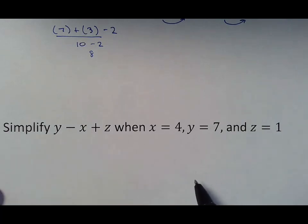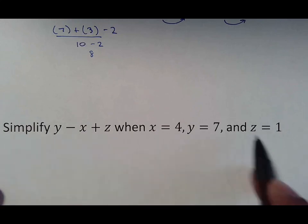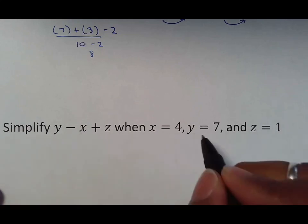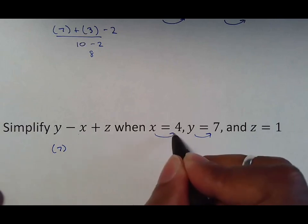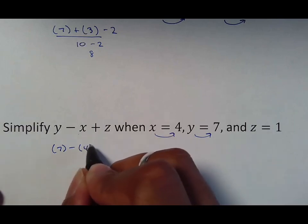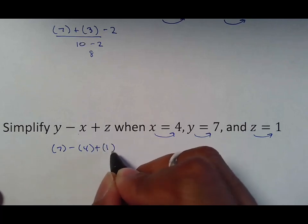Y minus X plus Z. What most people do is they say, well, Y is four and X is seven and Z is one. But that's not it. Y is actually seven. So Y is going to turn into a seven. X is going to turn into a four.